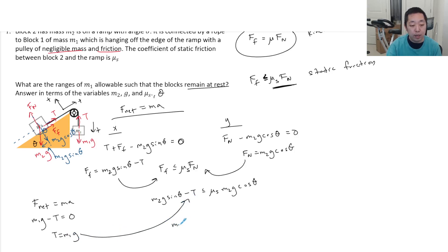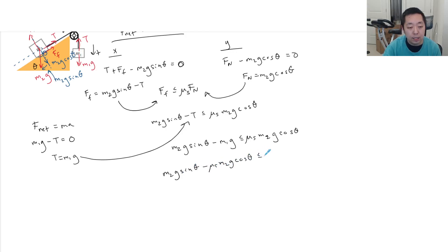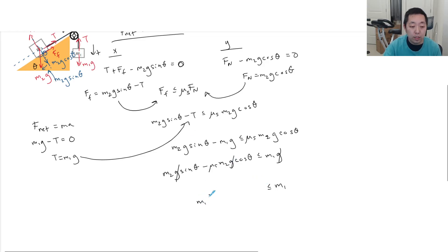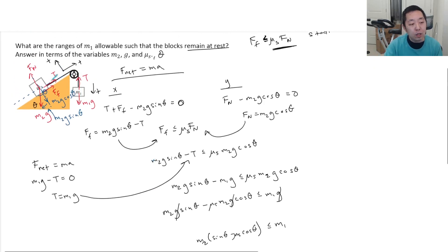Plugging T = M1G into the inequality gives: M2G sine theta minus M1G is less than or equal to mu S times M2G cosine theta. Moving M1G to the other side and dividing by G: M1 must be greater than or equal to M2 times (sine theta minus mu S cosine theta). That's the first result — M1 must be bigger than this expression when friction is pointing up the ramp. Now, that's only assuming friction were up the ramp. What if friction were down the ramp instead?